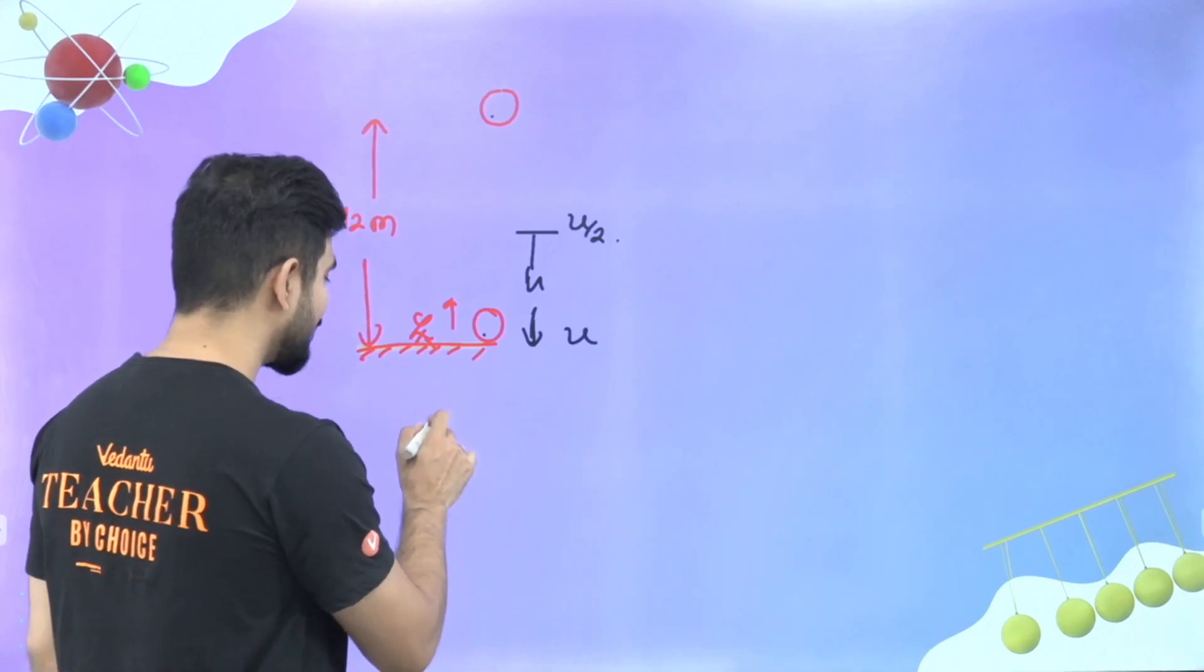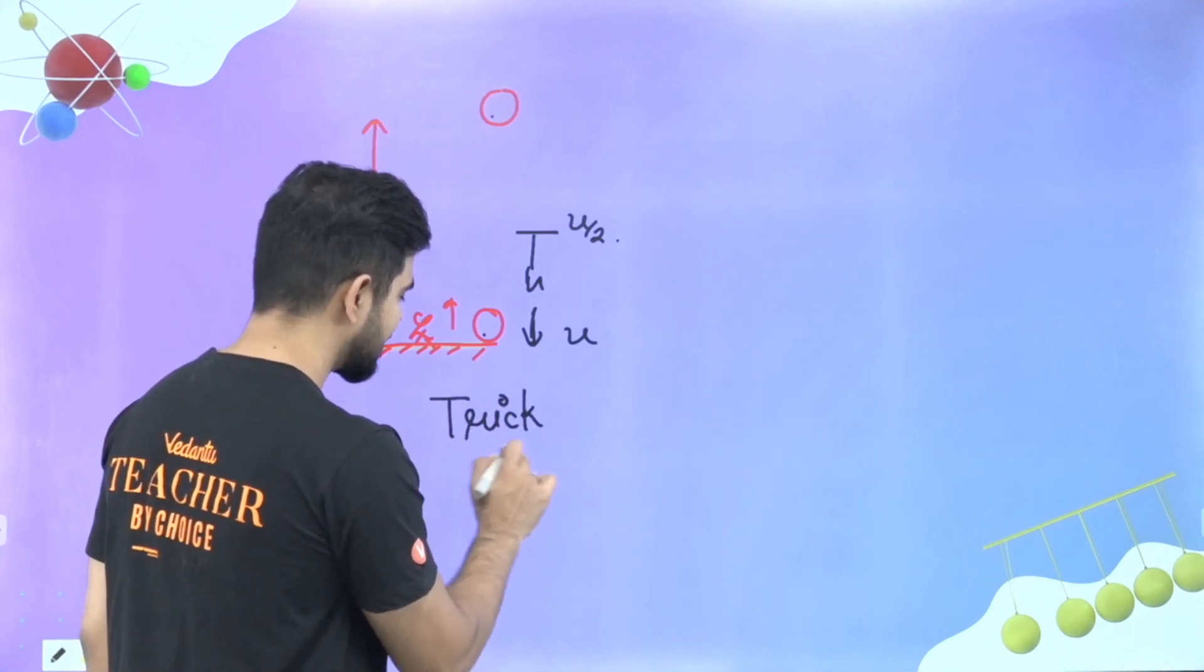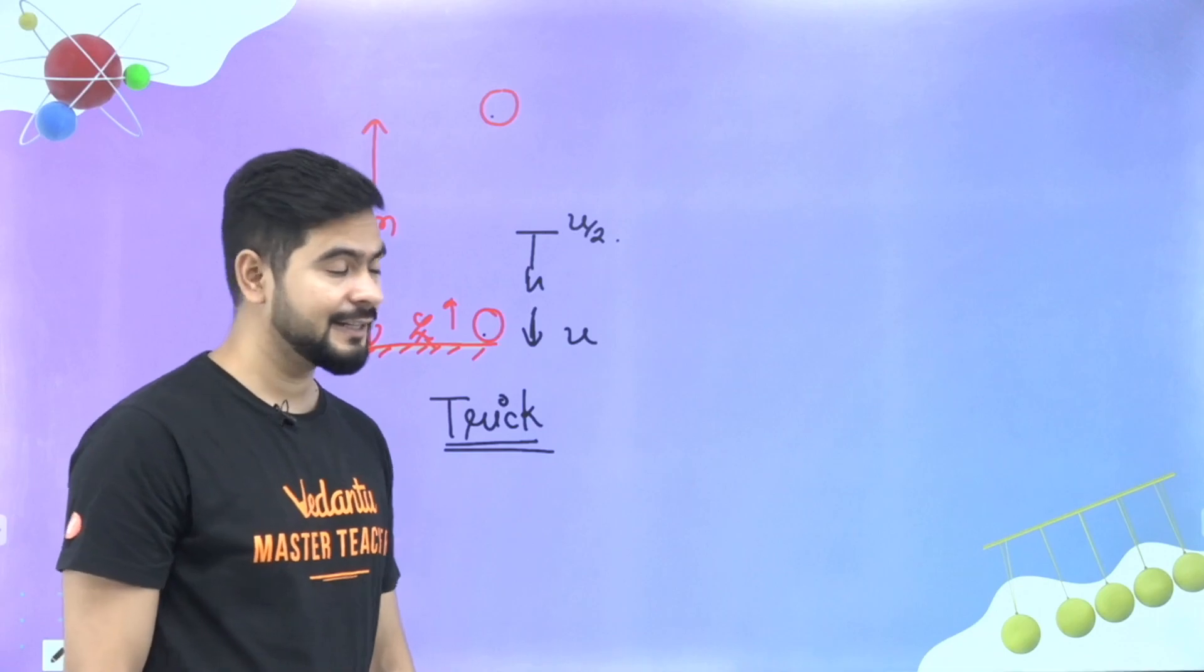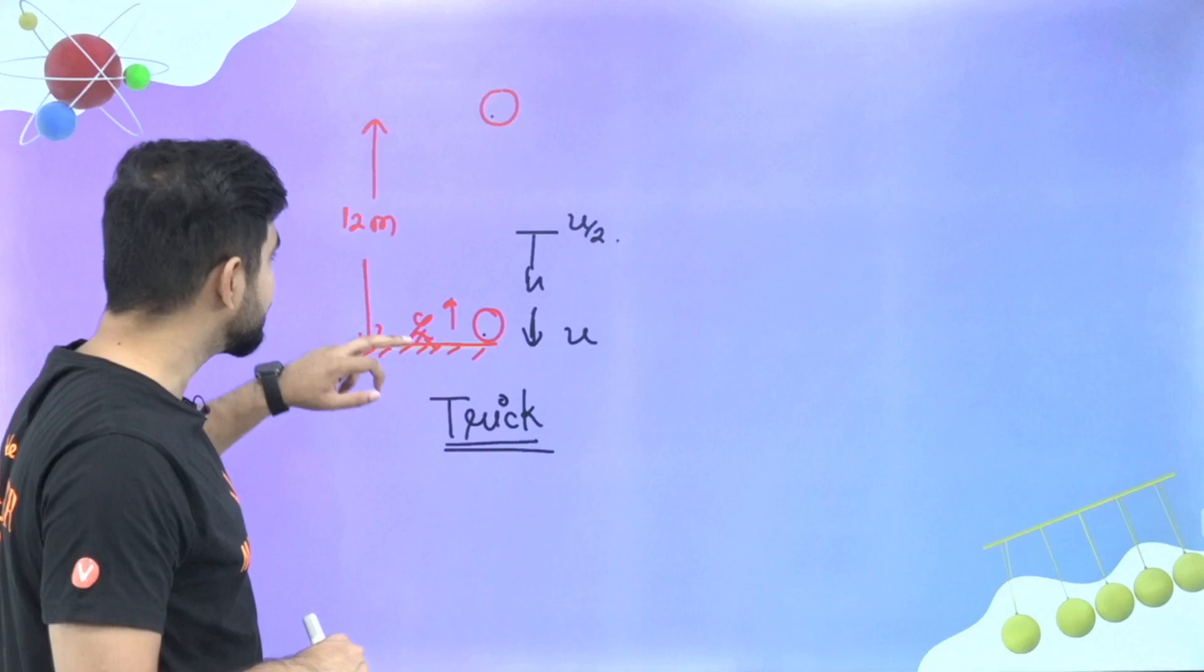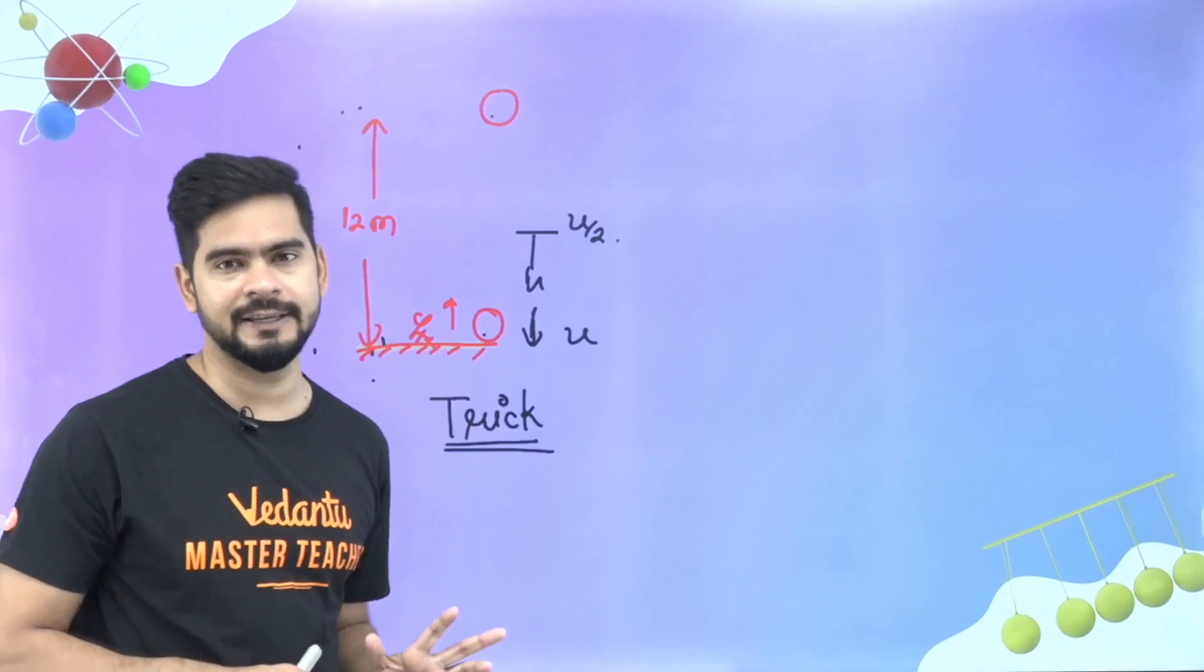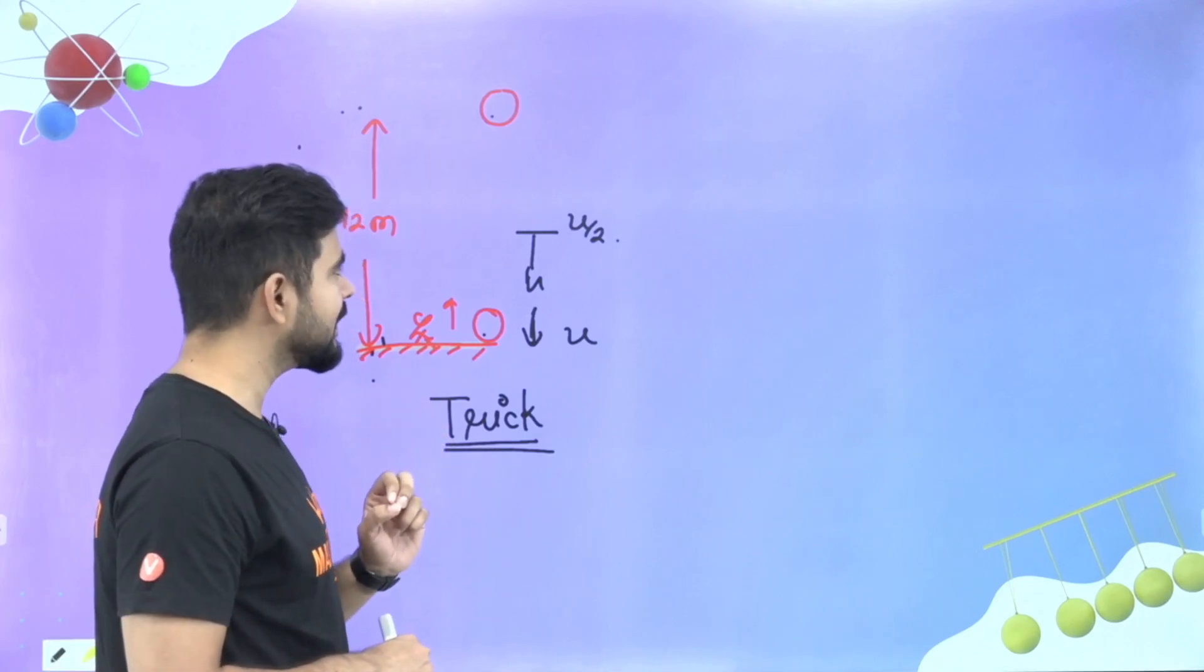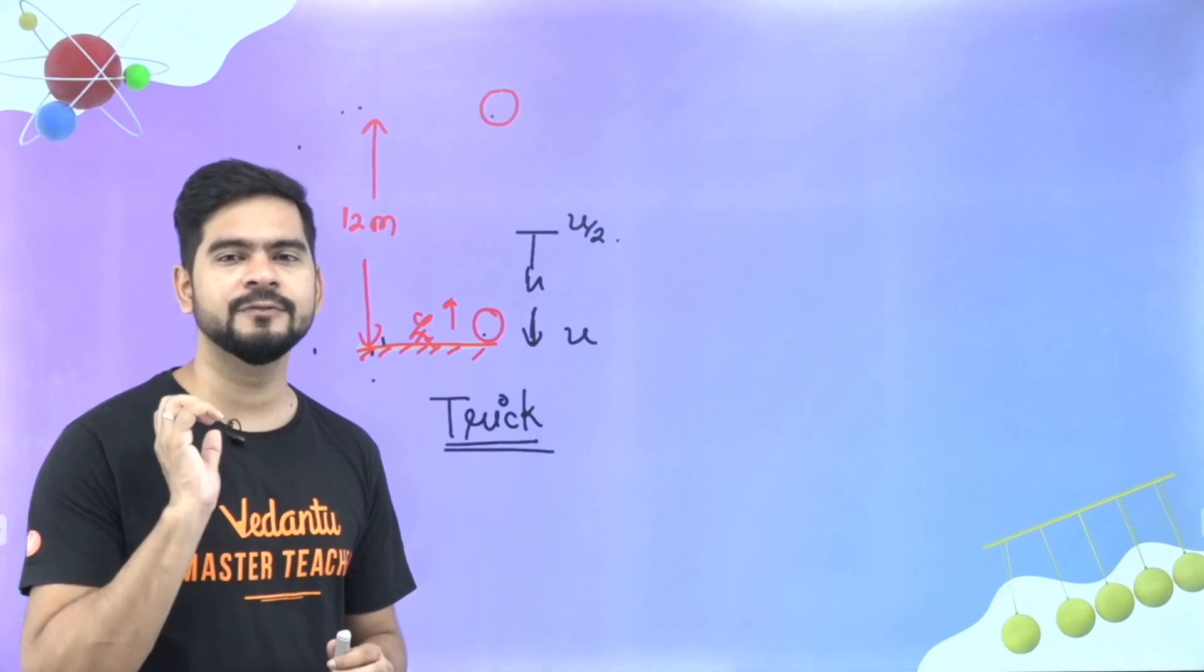But this time, I am going to tell you one very interesting trick. What is that trick? Without kinematic equation. When you have to know the height of the ball, and in the question, you have to know at what height the velocity is half, you have to pick up the half word.